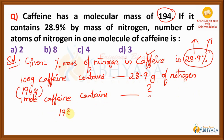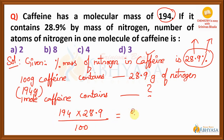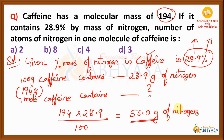Cross multiply: you get 194 into 28.9 divided by 100. You pause the video and do the calculation. You will get the value as equal to 56.0. So, 56 grams of nitrogen is present in one mole of caffeine.